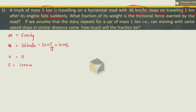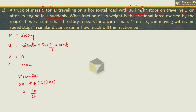Now we will find the acceleration using the equation V² = U² + 2AS. The final velocity is 0 and initial velocity was 10 m/s. So 0 = 10² + 2 × A × 1000. Rearranging, A = −100/2000 = −1/20 or −0.05 m/s². The minus sign tells us that velocity is decreasing in this time interval.